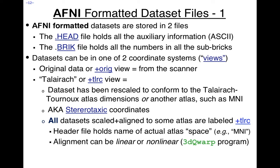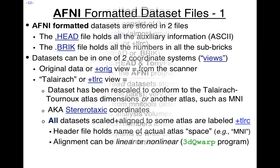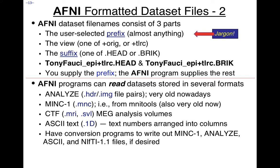The alignment between the original view — the data from the scanner — and the Talairach or MNI space can be a linear alignment or, nowadays more commonly, a nonlinear alignment. AFNI dataset file names have three parts: the user-selected prefix, which can be almost anything; the view, which is either +orig or +tlrc; and the suffix, which is either .HEAD or .BRIK. So for example: Tony_Fauci_EPI+tlrc.HEAD. The prefix is Tony_Fauci_EPI. You supply the prefix and the AFNI program supplies the rest.